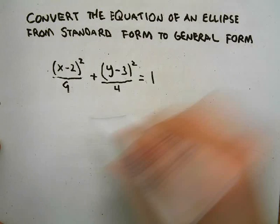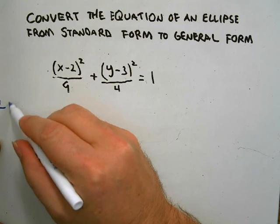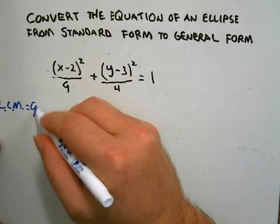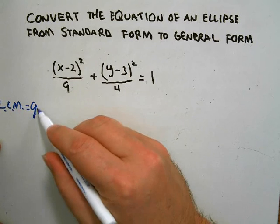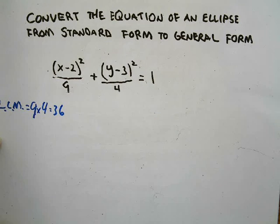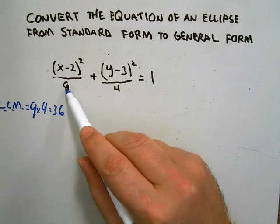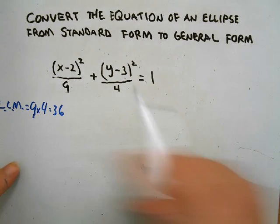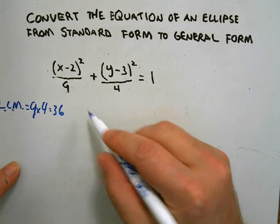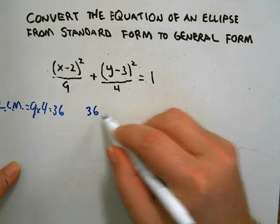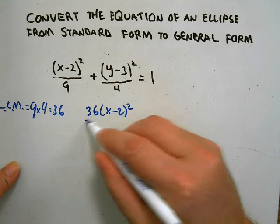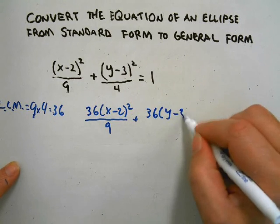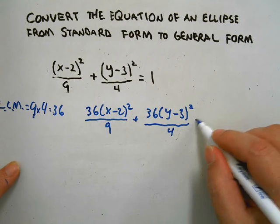What's the LCM? Most often it's going to be the product of these two, nine times four. The only time it wouldn't be the product is if this number was divisible by this number or was a factor of this number. So the LCM is thirty-six, so we want to multiply everything by thirty-six.